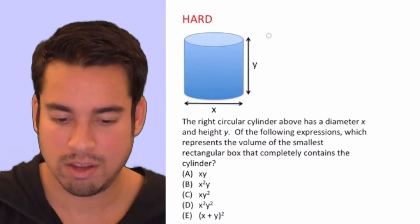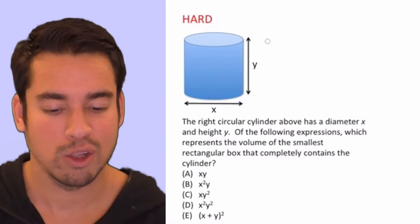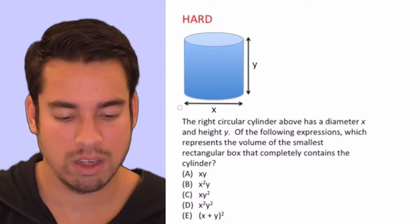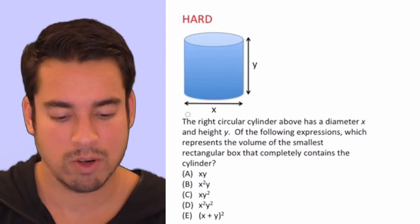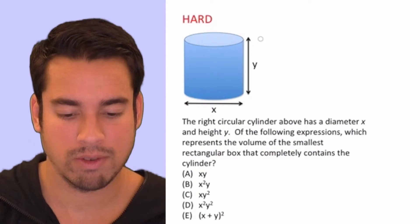So let's take a look at the question. We have a nice diagram here. It looks like a cylinder. We've got X and Y for the diameter, the width of the cylinder, and we've got Y for the height.